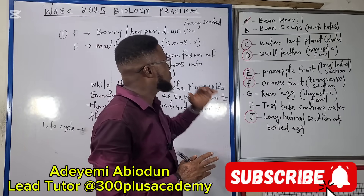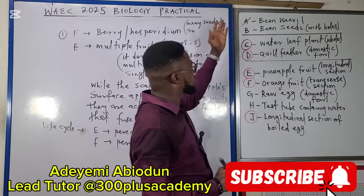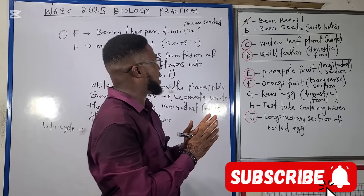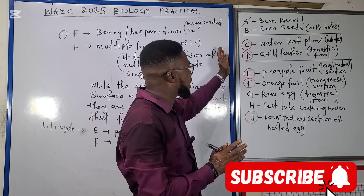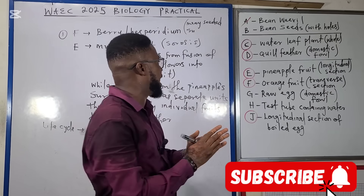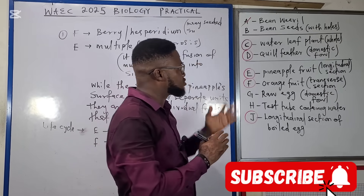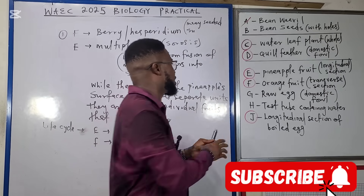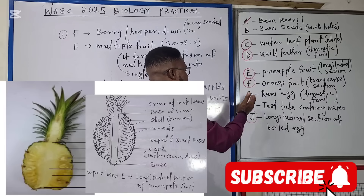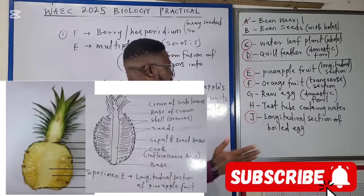We've dealt with the first group talking about specimen A and B, the second group talking about specimen C and D, and now to the last group talking about specimen E, F, G, H, and J.